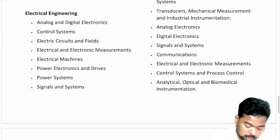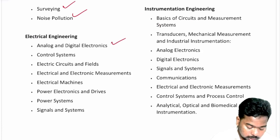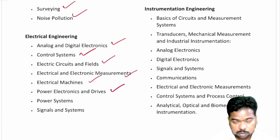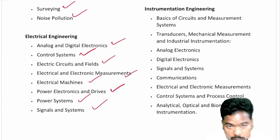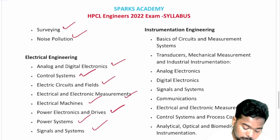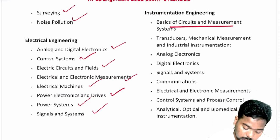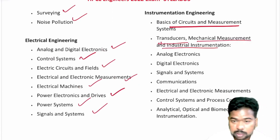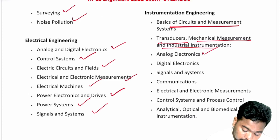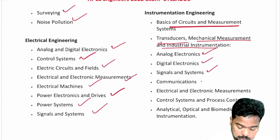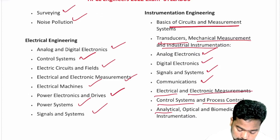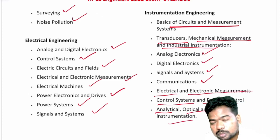The electrical engineering subjects include analog and digital electronics, control systems, electric circuits and fields, electrical and electronic measurement, electrical machines, power electronics and drives, power systems, and signals and systems. The instrumentation subjects include basics of circuits and measurement systems, mechanical measurement, industrial instrumentation, analog and digital electronics, signals and systems, communication, control systems, process control, and analytical, optical, and biomedical instrumentation.